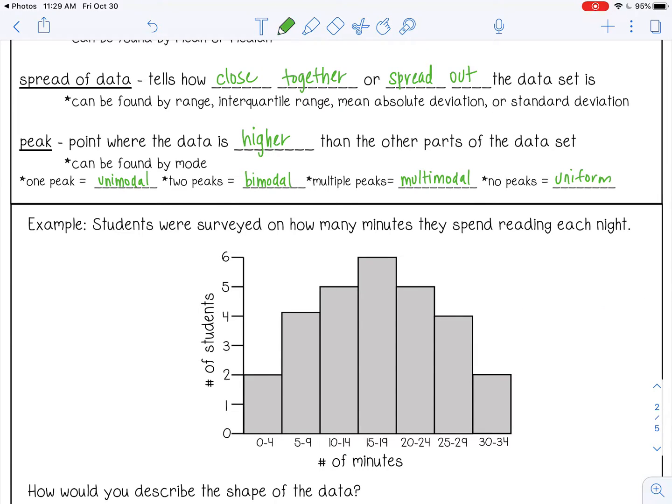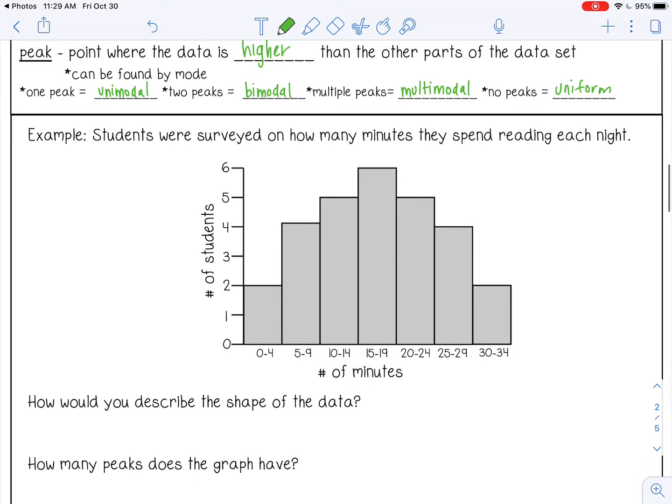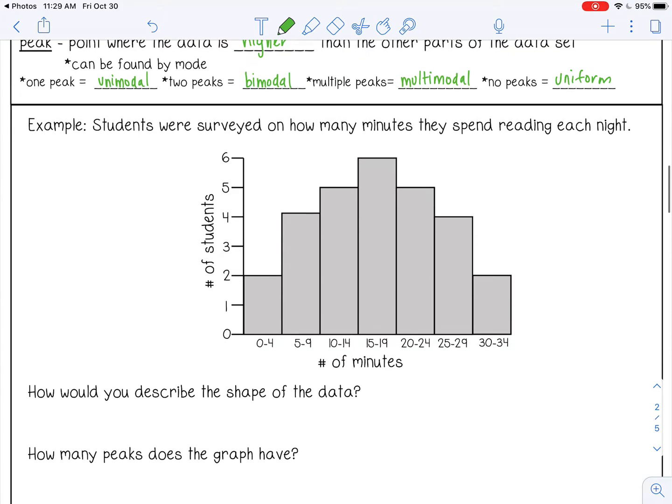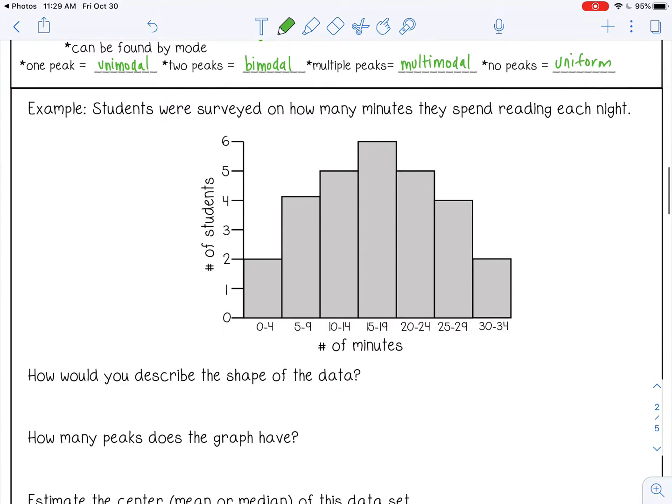Okay, so let's look at this example below. Students were surveyed on how many minutes they spend reading each night. So these are the number of students over here. This is the number of minutes at the bottom. And this is a histogram. And we can use this histogram to determine the spread, center, and shape of this data set.